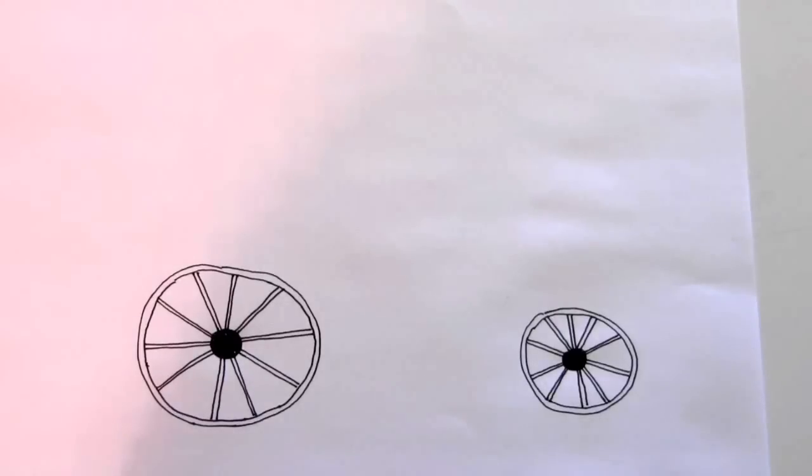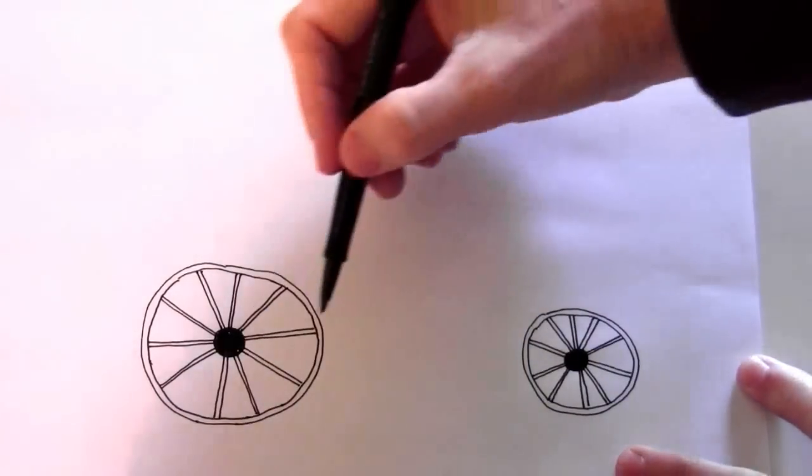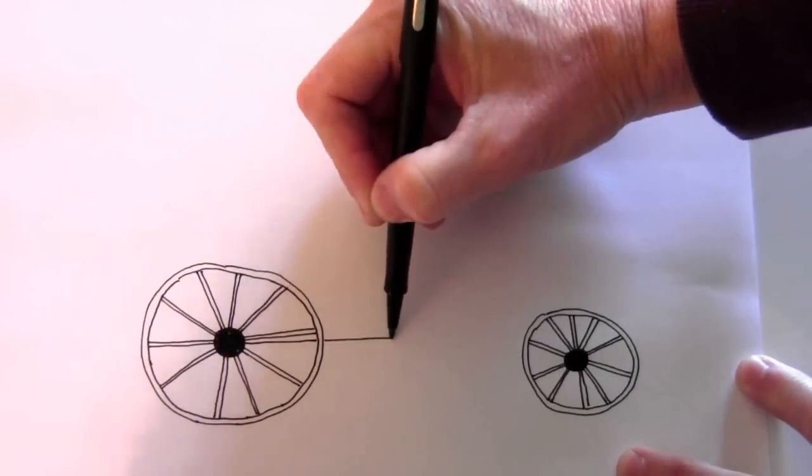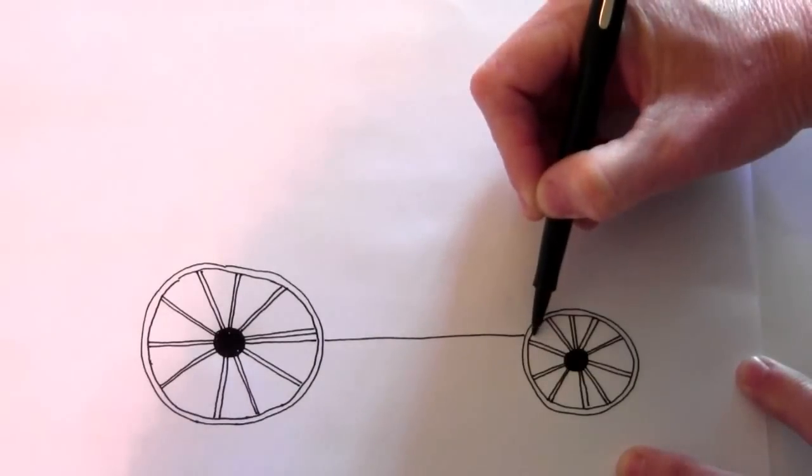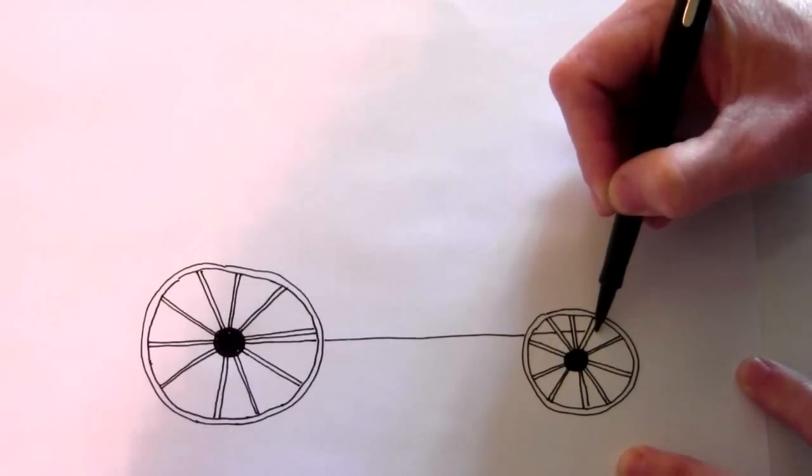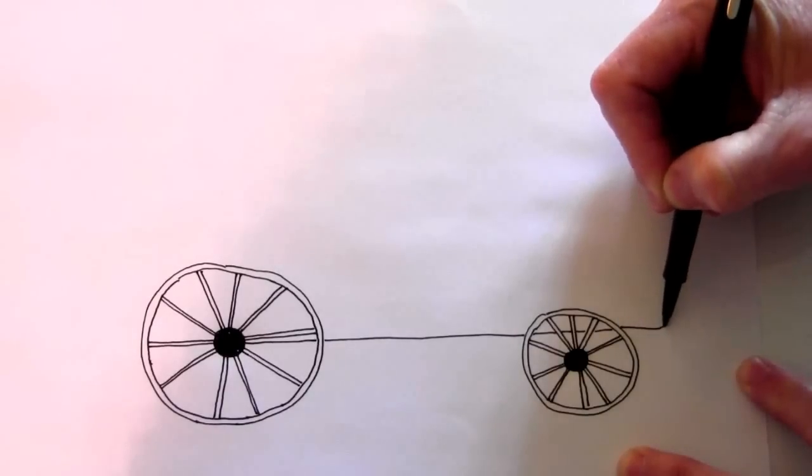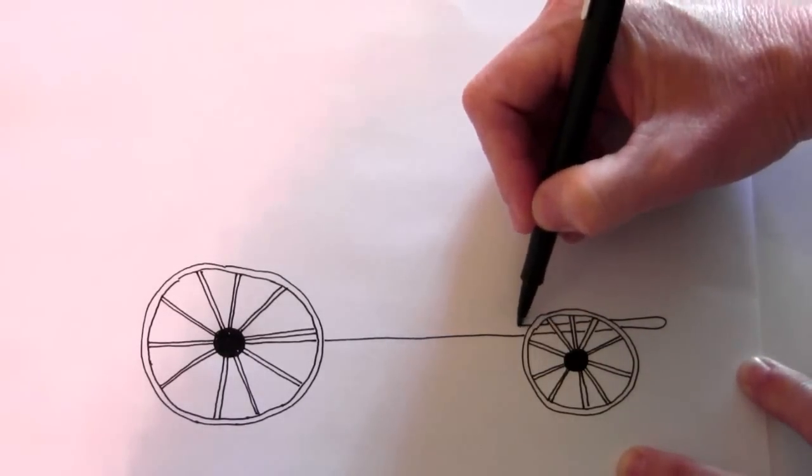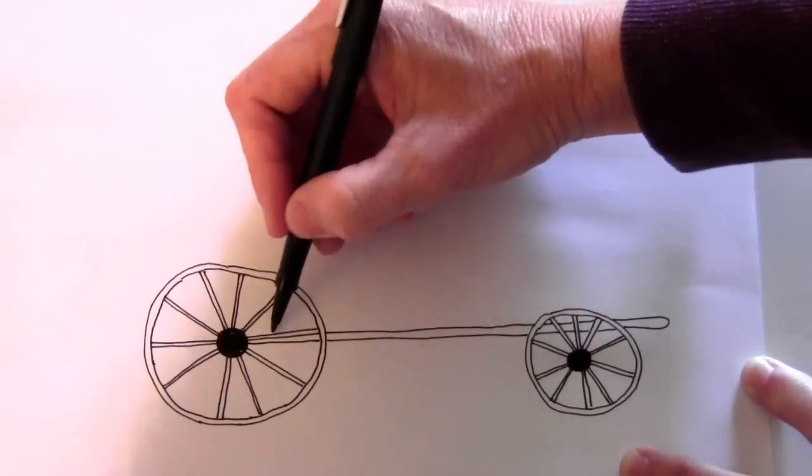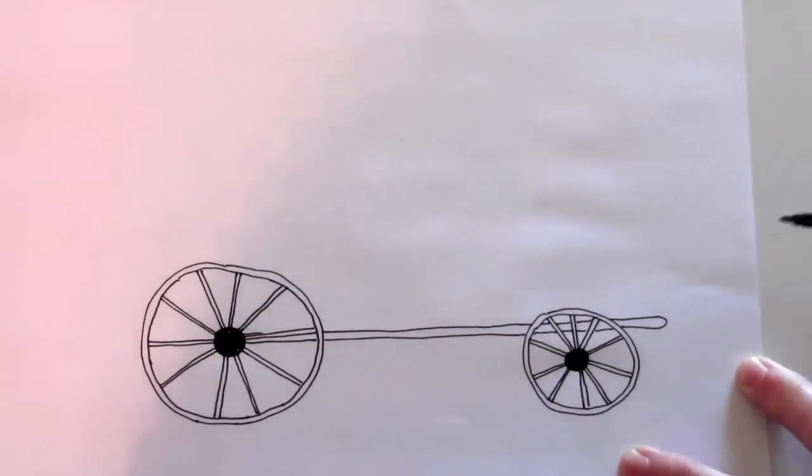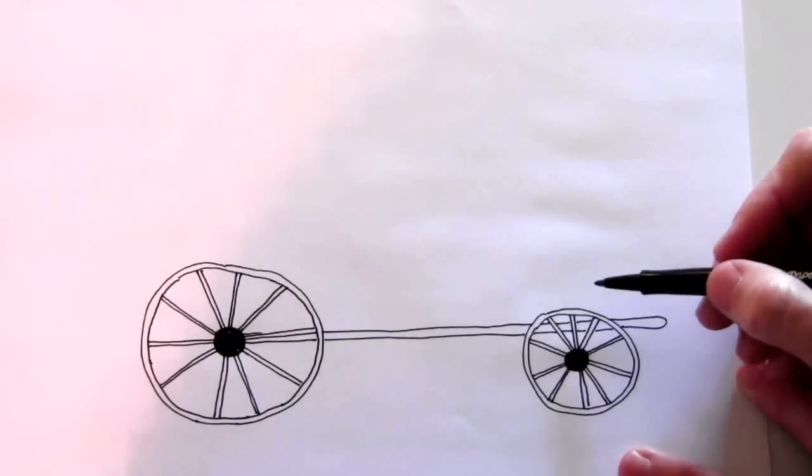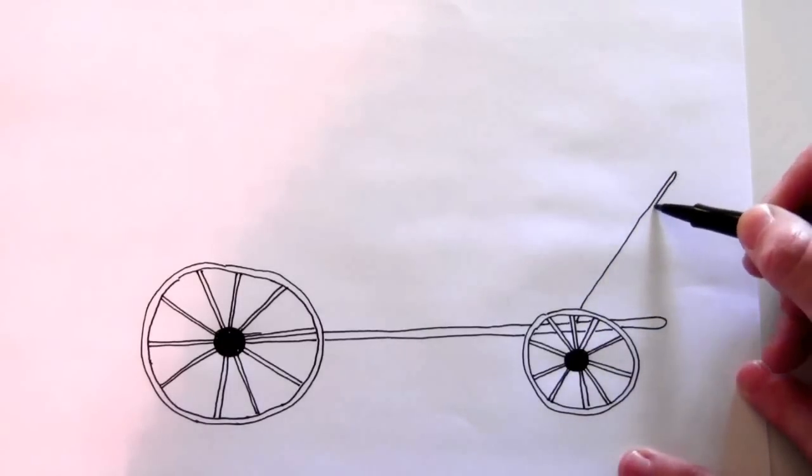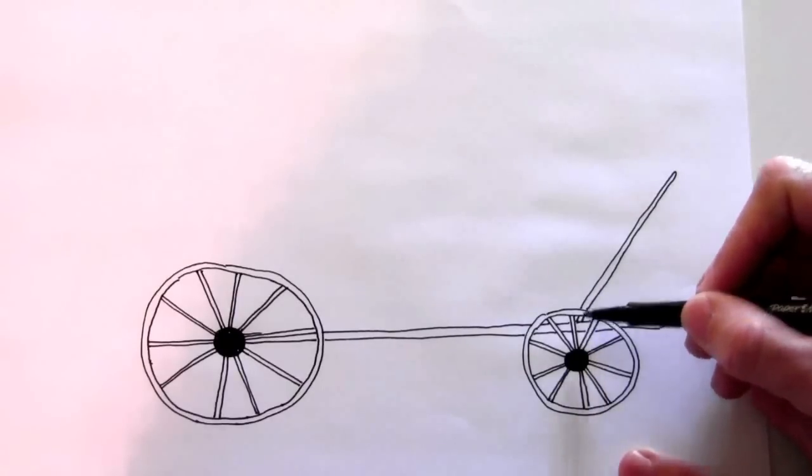Now we're going to draw the bottom part of the stagecoach. So from the middle of this wheel, draw a line. It goes behind the wheel, and then it goes behind this wheel. And then it turns around and it goes back and it connects here somewhere. On the front here, you'll see how this fits in later, but there's I think it's a handle or the brake. It goes out at a slant like this and it just connects back down to that.